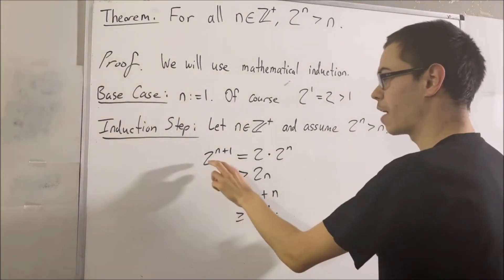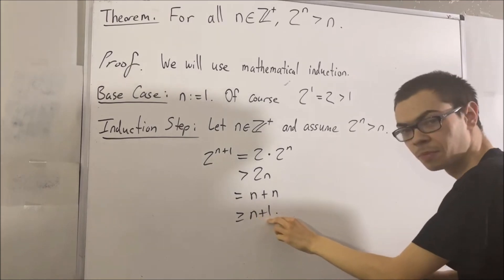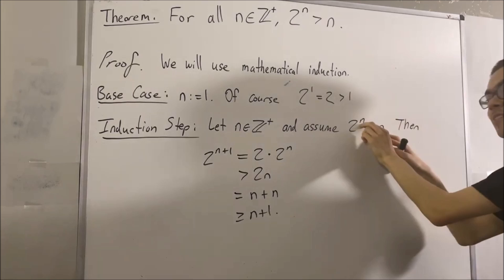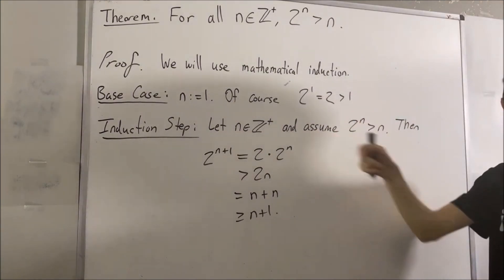So as we can see now, we have 2 to the n plus 1 is greater than n plus 1. So we have proven that this is also true if instead of n, we have n plus 1. And that completes the induction step.